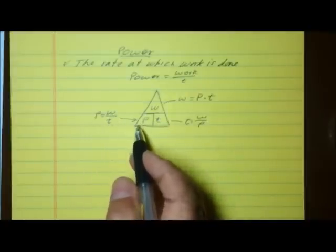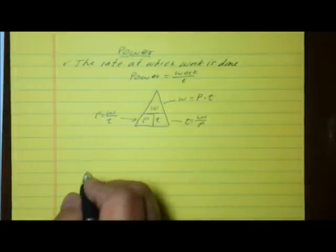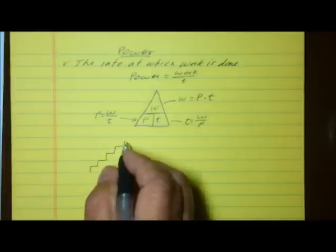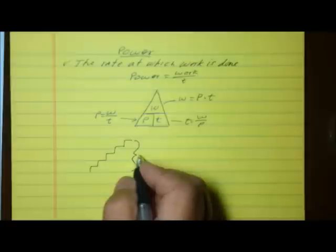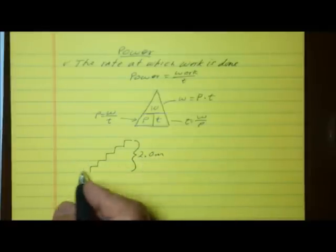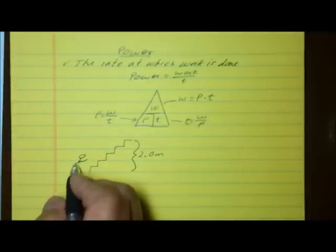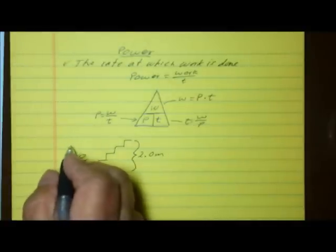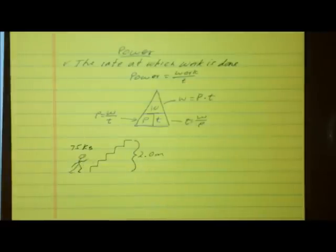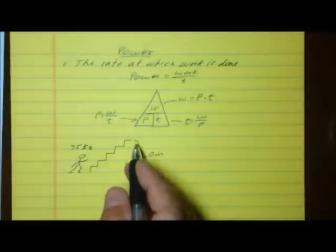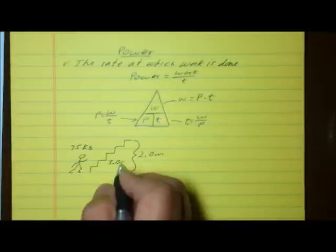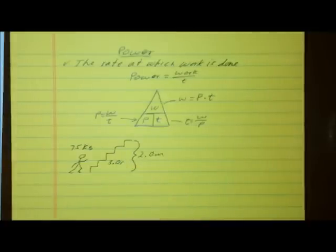Let's take a look at an actual situation. Let's say you're going to walk, run, or crawl up a flight of stairs that has a height of 2.0 meters. Your mass is 75 kilograms. The question is: if you run up those stairs — lifting this mass vertically 2 meters in 3 seconds — how much power are you producing? At what rate are you doing the work?